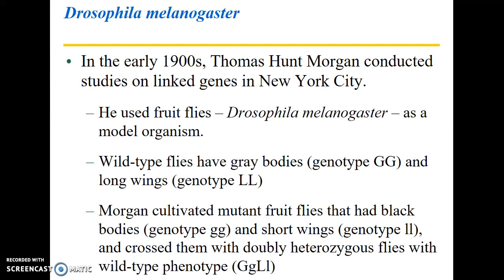In the early 1900s, Thomas Hunt Morgan conducted studies on linked genes in New York City using the common model organism Drosophila melanogaster, the common fruit fly. 'Drosophila' means lover of dew, and 'melanogaster' means dark belly — that's the origin of the scientific name.